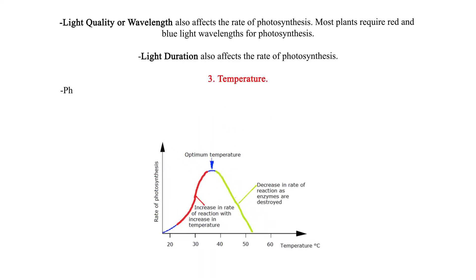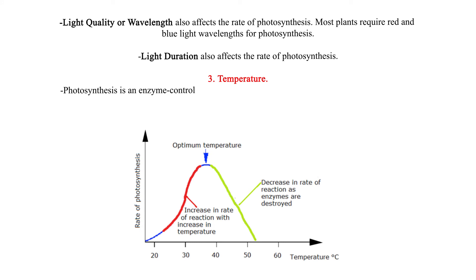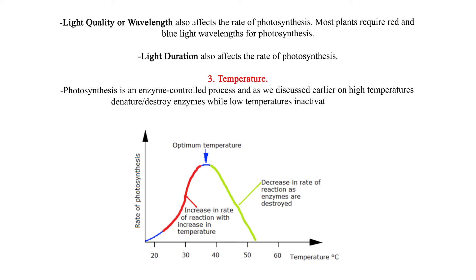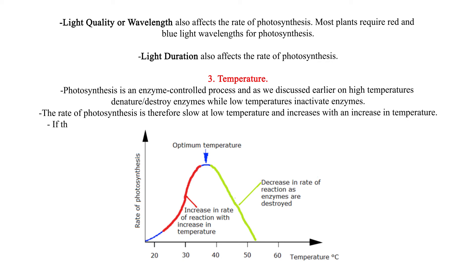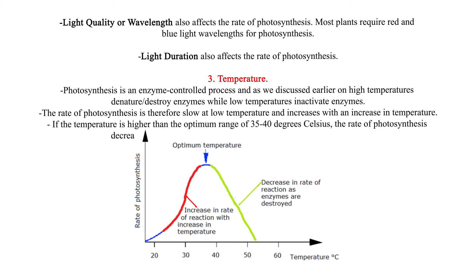3. Temperature: Photosynthesis is an enzyme-controlled process. High temperatures denature and destroy enzymes, while low temperatures inactivate enzymes. The rate of photosynthesis is therefore slow at low temperature and increases with an increase in temperature. If the temperature is higher than the optimum range of 35 to 40 degrees Celsius, the rate of photosynthesis decreases and eventually stops since the enzymes have been denatured.